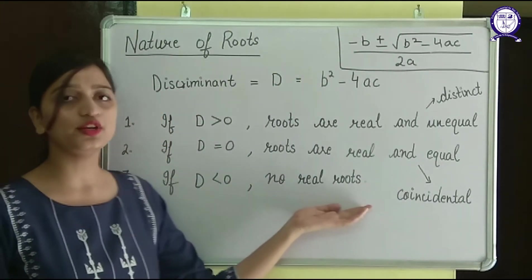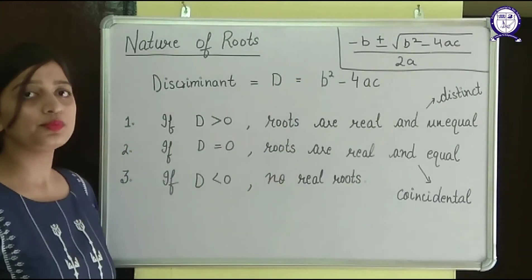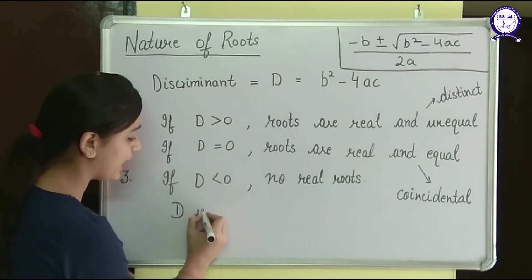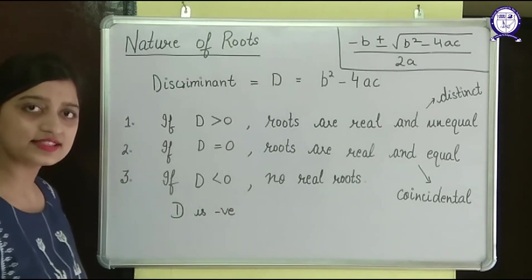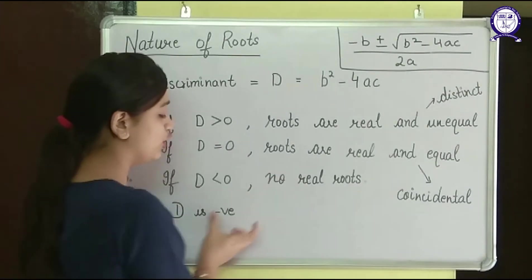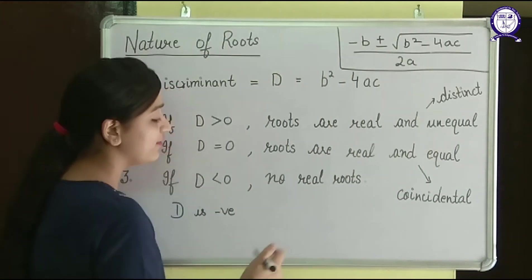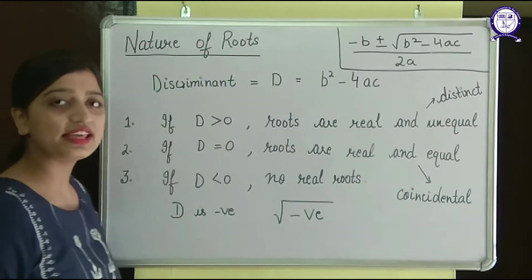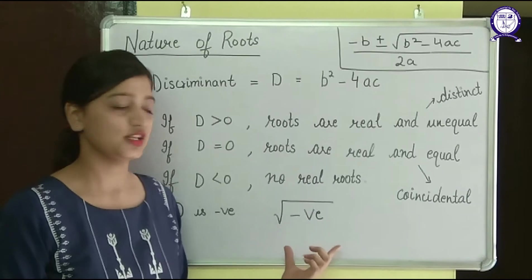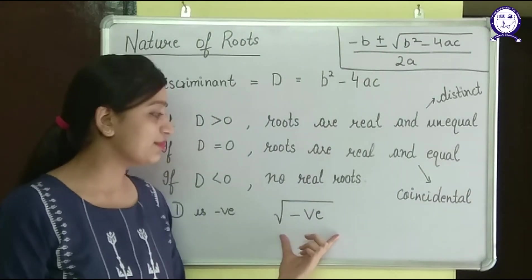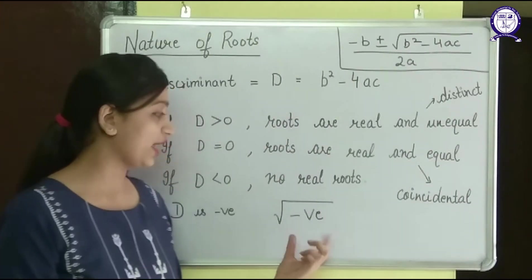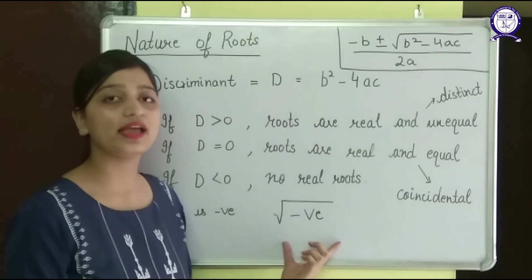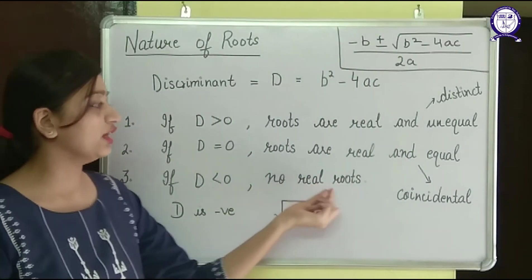Why will there be no real roots? Because look at this — under root of b squared minus 4ac. If D is less than 0, that means D is negative. So when I put this value of b squared minus 4ac into the formula, I will get a negative number under the root. We know that we cannot find the root of negative numbers. These numbers don't exist as real numbers — they are something else, not real numbers. That's why we will have no real roots.